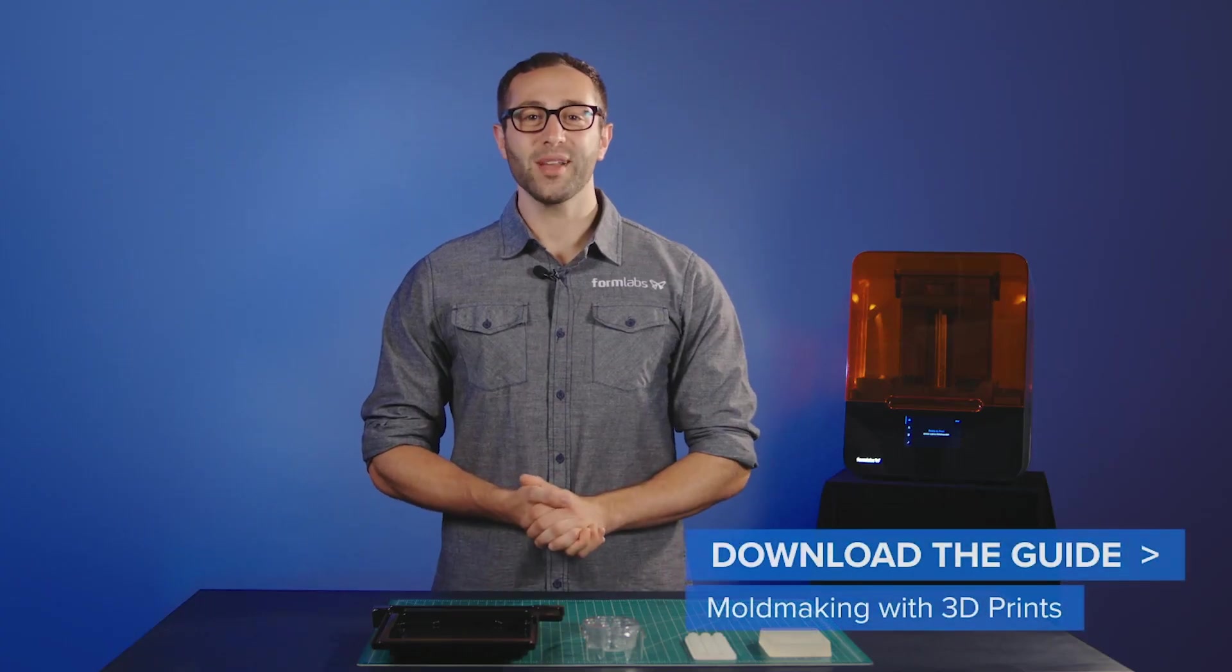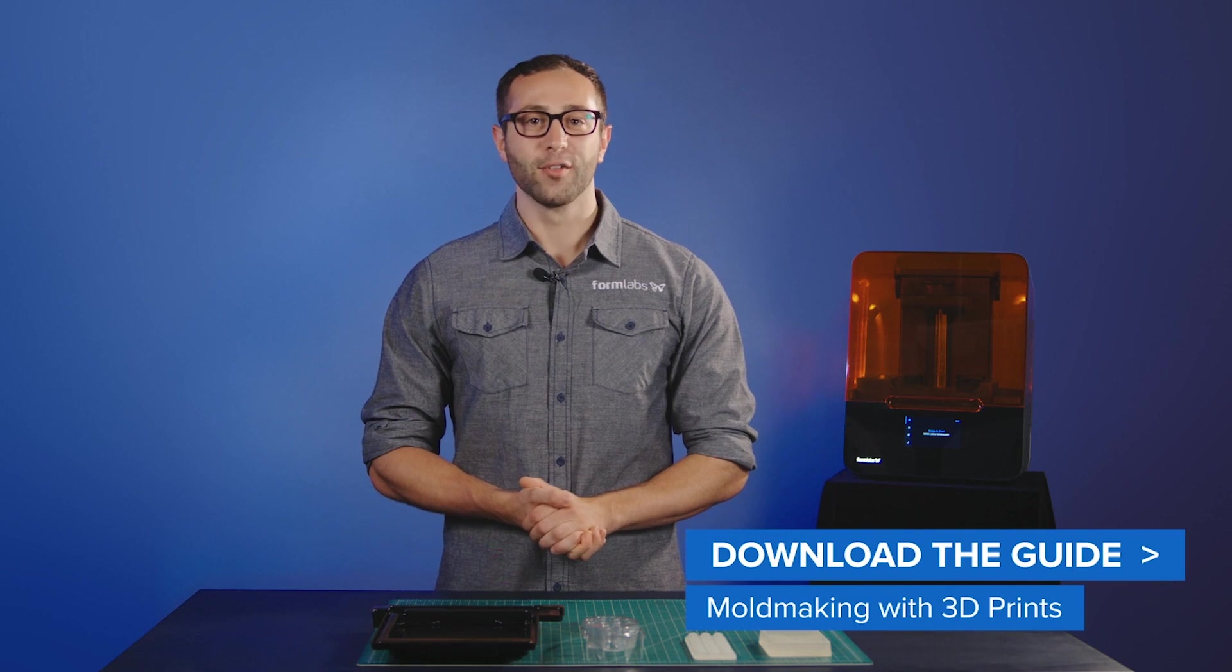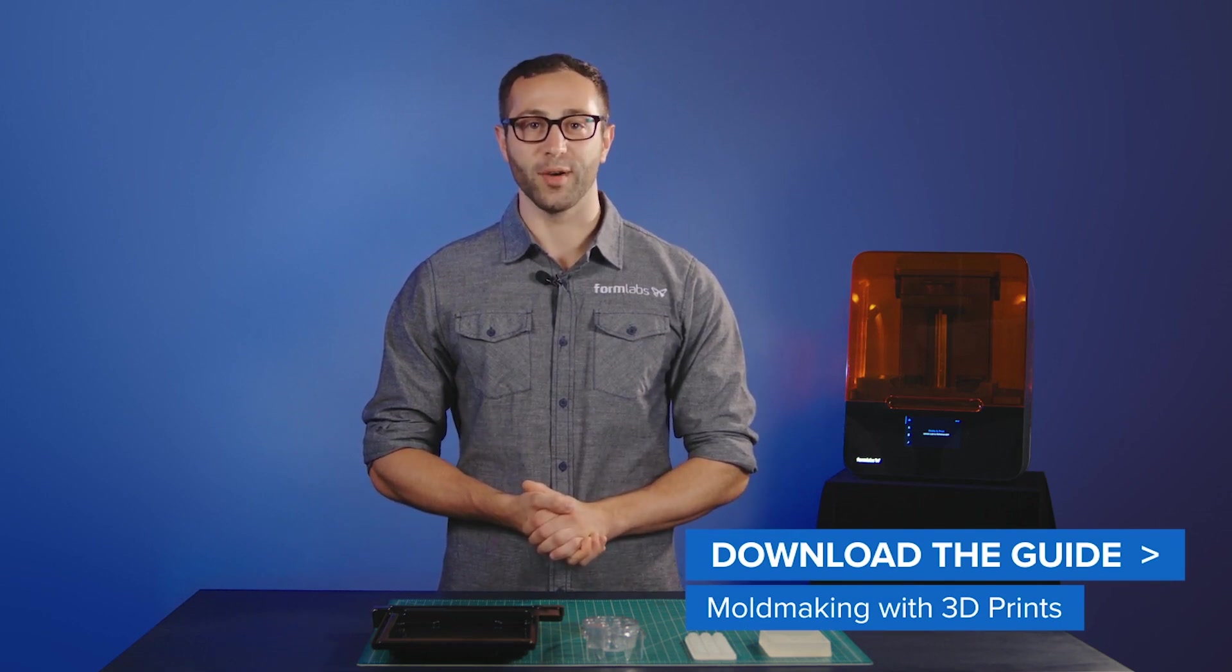In this video we'll demonstrate how you can use 3D printed molds and tooling for prototyping and short-run production of vacuum form parts. Vacuum forming is used to produce plastic parts for uses ranging from product packaging to automotive components.